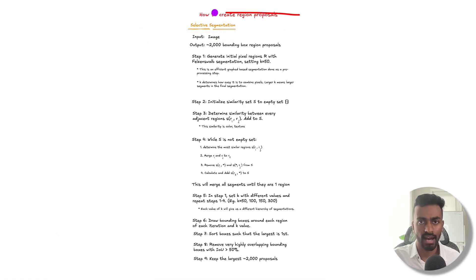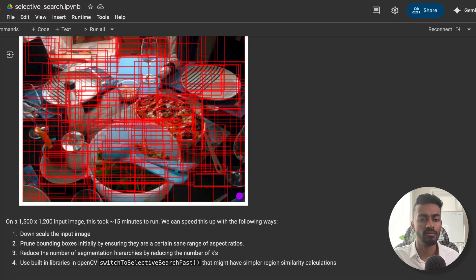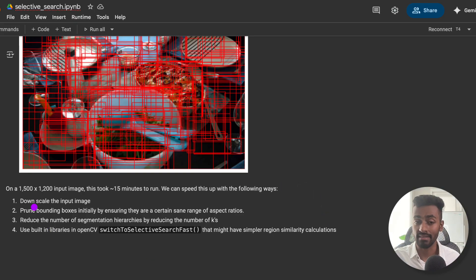And then we took a look at an algorithm for selective segmentation, which is an algorithm for creating these region proposals. And we also saw some fun images to show the results of the final process, along with some caveats and how we can make this much faster. And that's all that we have for today.